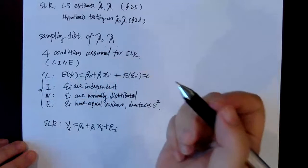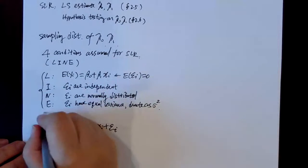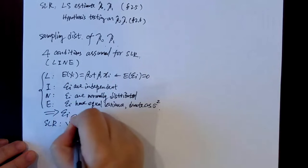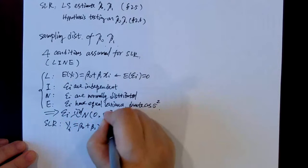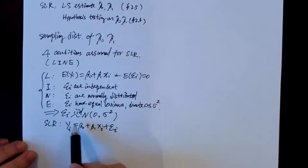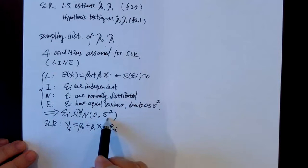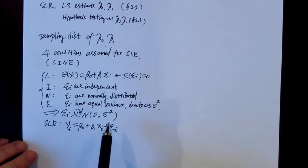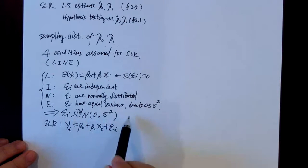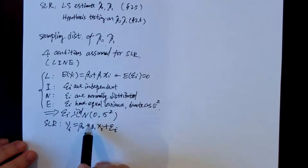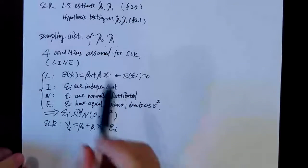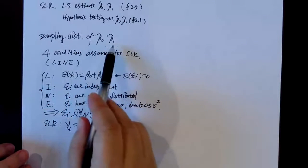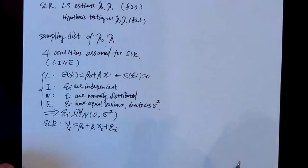Together, the four conditions are equivalent to assuming that epsilon-i's are i.i.d. normally distributed with zero mean and common variance sigma-squared. Note that we have sigma-squared without a subscript i, meaning each epsilon-i has the same variance — common variance across all i. All the sampling distribution properties of beta-0-hat and beta-1-hat are based on these conditions.